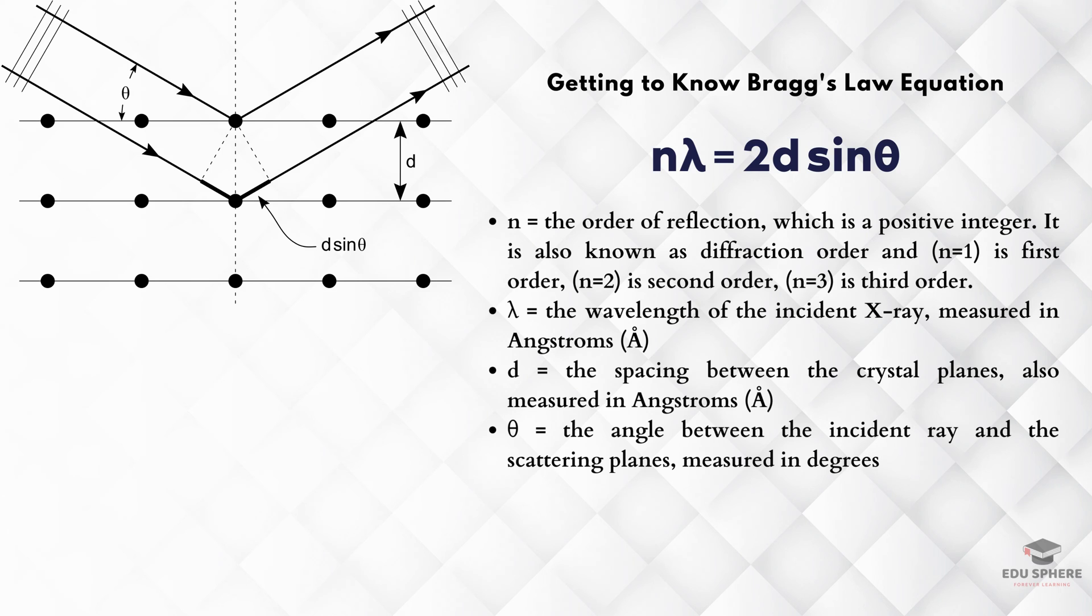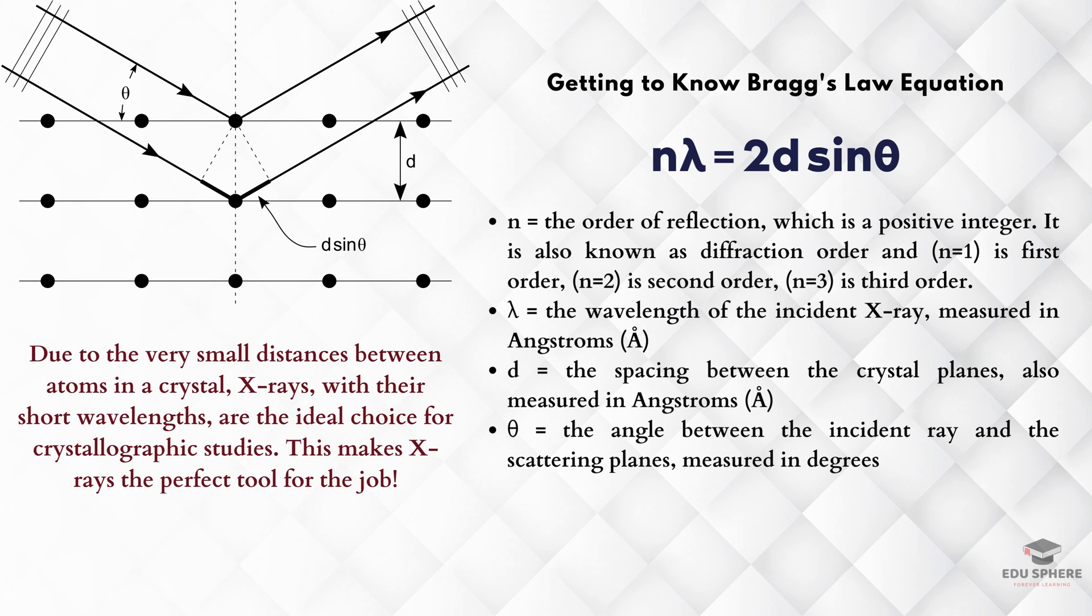This equation might look simple, but it's incredibly powerful. It helps scientists unlock the secrets of crystals in many different ways. Because the distances between atoms in a crystal are super tiny, the most suitable wavelength for crystallographic studies lies in the X-ray region, which have short wavelengths. That's why X-rays are the perfect tool for this job.